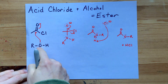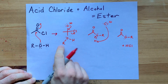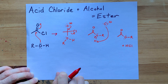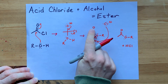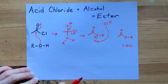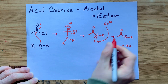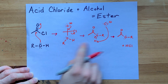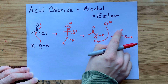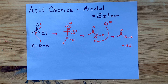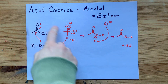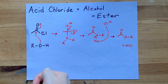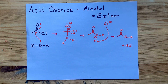So oxygen attacks the carbon, which makes an intermediate that has four single bonds at that carbon site. The double bond from oxygen reforms as the chloride leaves. And that chloride deprotonates the alcohol to leave you with an OR group from the alcohol attached to the carbonyl group of the acid chloride. You'll note that this mechanism is very similar to most of the mechanisms that take place for acid chlorides reacting with water, ammonia, et cetera.